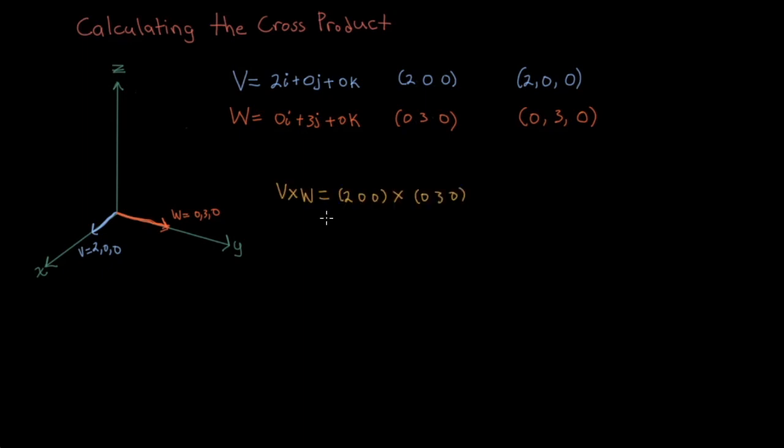So if we take V cross W, which would be (2,0,0) x (0,3,0), we would get (0,0,6). As you can see, the cross product lies in the z-axis.